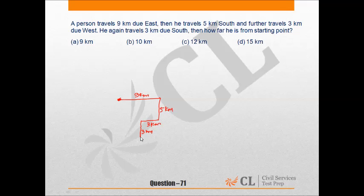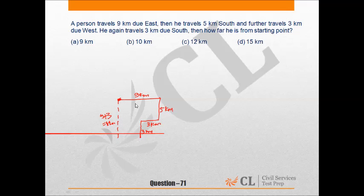Now that person is at this point. Then how far is he from the starting point? This total distance is 5 plus 3, that is 8 km. And this distance is 9 minus 3, that is 6 km.